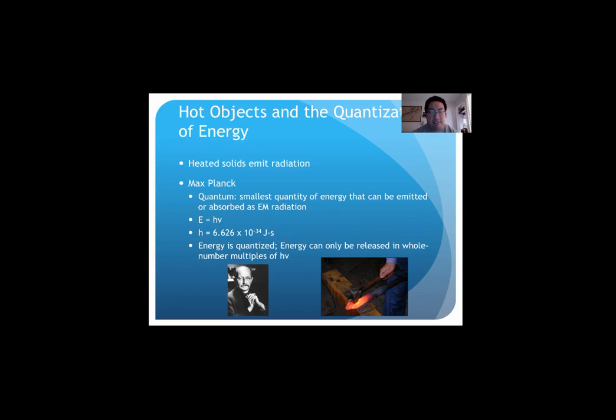So Max Planck was a scientist, he's that handsome gentleman below, and he talked about the quantum. And this is the smallest amount of energy that can be emitted or absorbed as electromagnetic radiation. The light form of this is known as the photon. We talked about today in the sheets that I gave out in class that energy equals Planck's constant times nu. Planck's constant is this easy to remember number, 6.626 times 10 to the negative 34 joules per second.